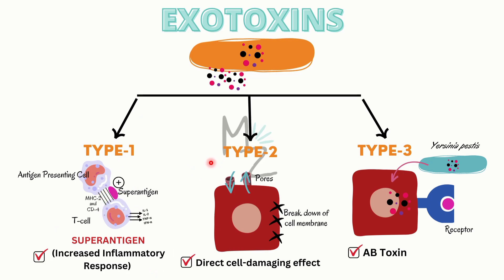Type 2 exotoxins exert their effects by directly acting on and damaging cells. The damage can occur by putting pores in the cell membrane, leading to leaking of material in and out, or by directly breaking down the cell membrane. This is the direct cell-damaging effect.